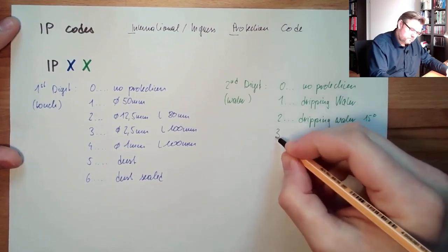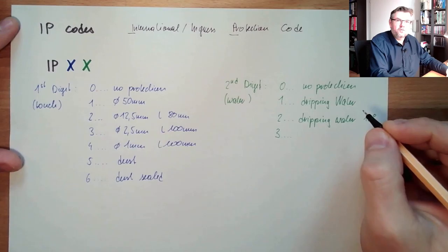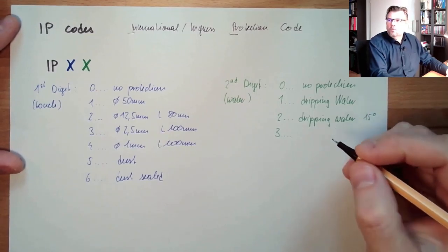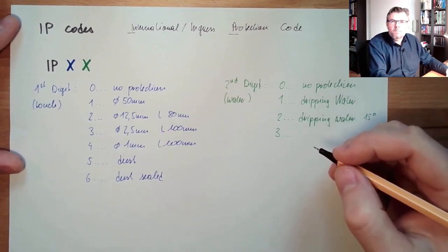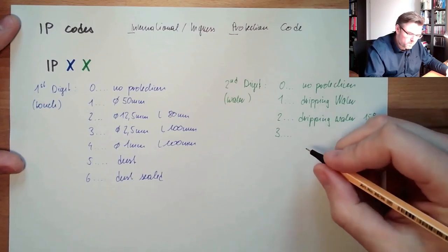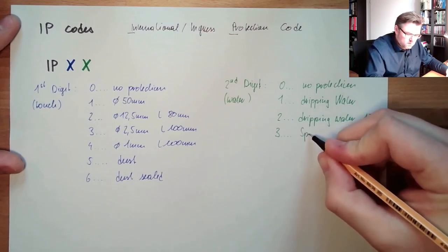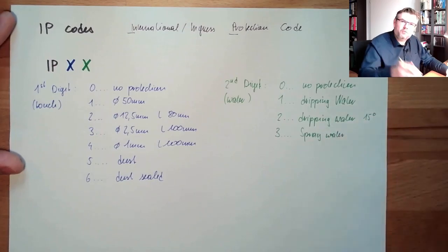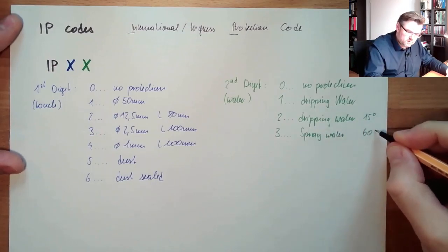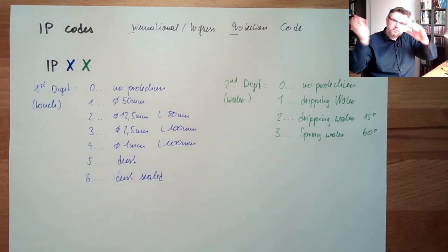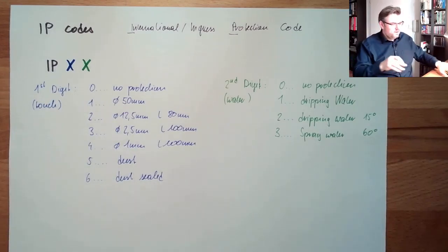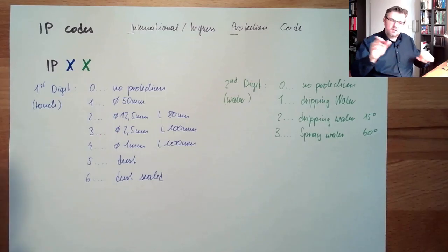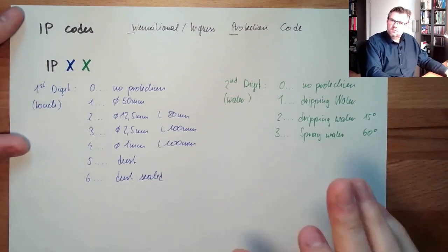3, second digit 3, would then be spray water. Up to a tilt level of 60 degrees. Spray water, for whatever reason, up to 60 degrees. IPX3, protected.